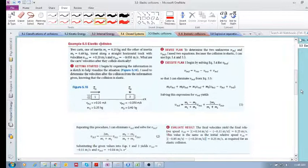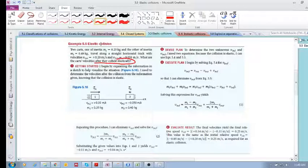So let's have a look at this example. Object cart one, cart two. We know its velocity and its inertia initially. We know this cart's initial velocity and its inertia. They collide. What are the cart's velocities after they collide elastically? Again, what are our tools?